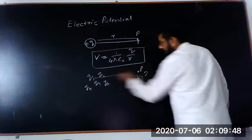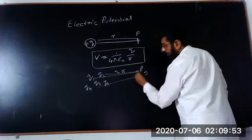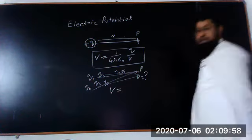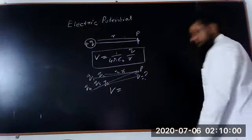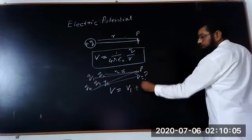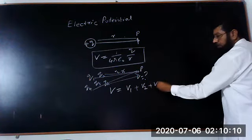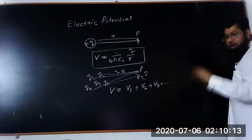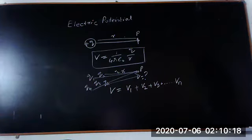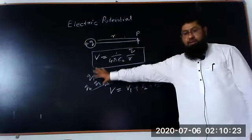Here the distance to charge 1 is R1, to charge 2 is R2, to charge 3 is R3, and so on. The total potential V can be written as the sum of potentials V1, V2, V3, up to the potential due to charge N. This is the sum of all the potentials at any point due to the sum of all charges.